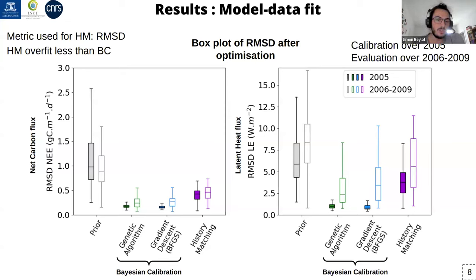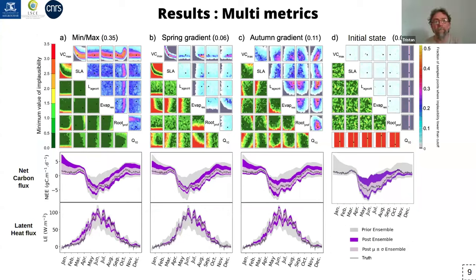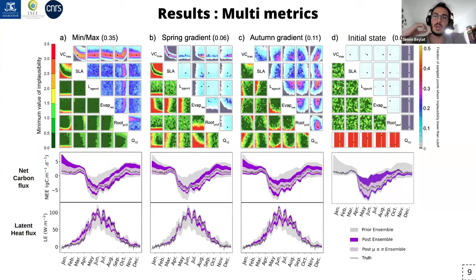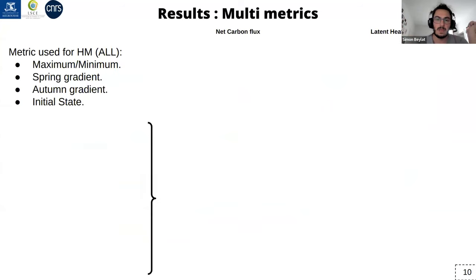Now we can look at how to improve the results of history matching. What we did was use the RMSD between the simulation and the observation as the metric to emulate, but this is not the best metric for a Gaussian process because it is quite noisy and difficult for the Gaussian process to converge and reduce uncertainty. So instead we used several more physics-based metrics focused on the simulation. After just one wave we were able to focus calibration on specific parts of the simulation. Another advantage of history matching is that it is really easy to mix all these metrics and perform a multi-criteria optimization.